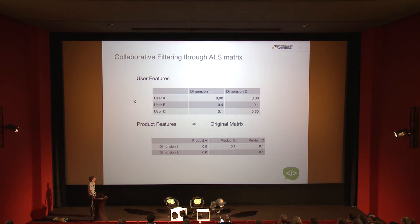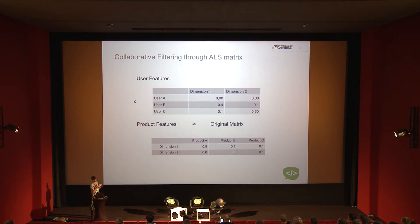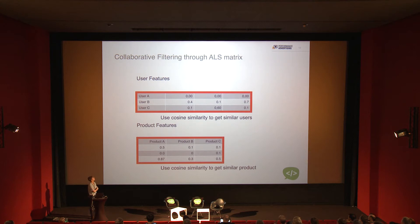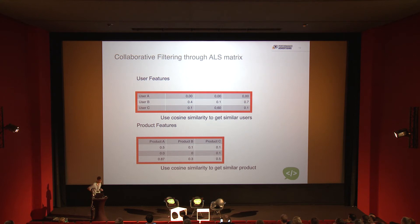If you were to multiply these two matrices again, you would get back an approximation of the original matrix. This is how you approach the problem — reducing dimensions and splitting things apart into user features and product features. Now calculating similarities is straightforward: go back to cosine similarity. For similar users, calculate cosine similarity on latent user features; do the same for product features.